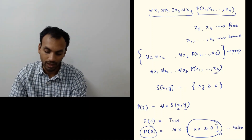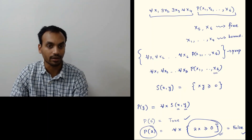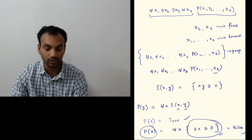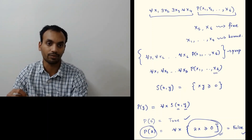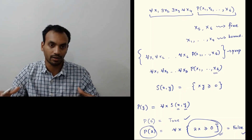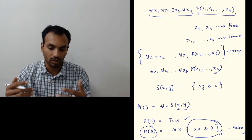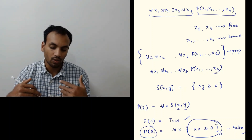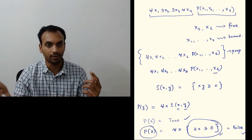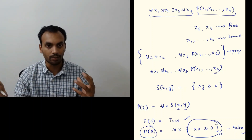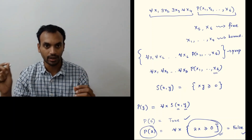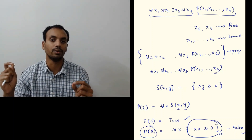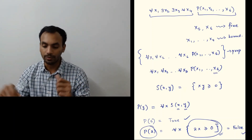So there are two different truth values for different values of Y. This is an example of a predicate in which one variable is bound and the other is free, and the predicate's truth value depends on the value of the free variable.